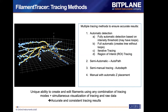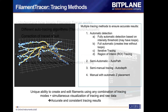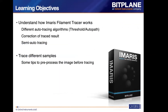Today's learning objectives are to understand how Imaris Filament Tracer works, to understand the different auto-tracing algorithms, how to correct trace results, and how to use semi-automatic tracing for complicated images. I will also show different image samples including neurons, blood vessels, and mitochondria, and give tips on how to pre-process images before tracing for better, cleaner results.